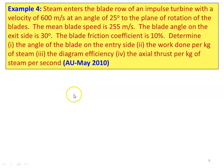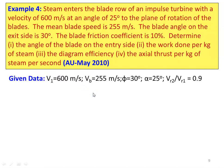Example 4. Steam enters the blade row of an impulse turbine with a velocity of 600 meters per second at an angle of 25 degrees to the plane of rotation. Mean blade speed is 255 meters per second. Blade angle on exit side is 30 degrees. Blade friction coefficient is 10 percent. Determine: blade angle on entry side, work done per kg of steam, diagram efficiency, and axial thrust per kg of steam per second.